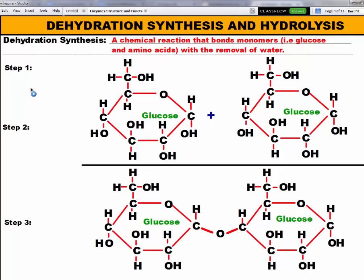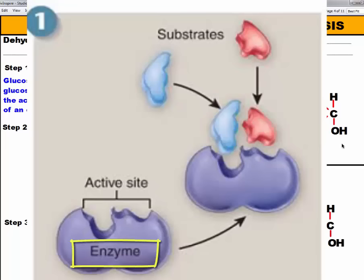So first of all in step one of dehydration synthesis, you have our glucose molecules here and they have to fit into a protein called an enzyme, and there's a specific part of an enzyme called the active site.